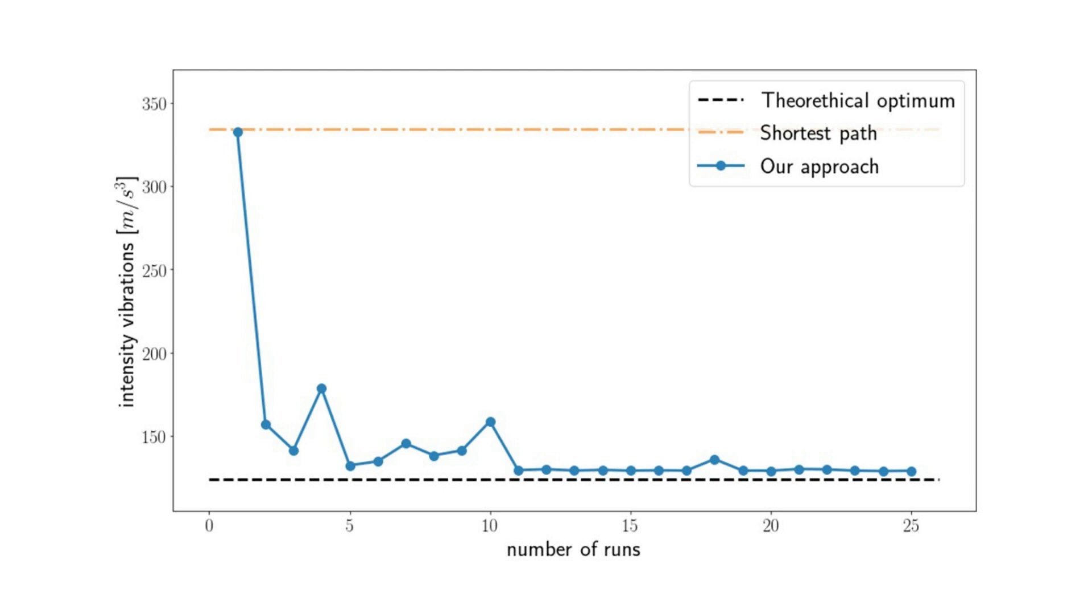As no information is available a priori, our approach initially performs similarly to the shortest path. After a few runs, the robot is able to follow a path along which it experiences similar vibrations as the theoretical optimum.